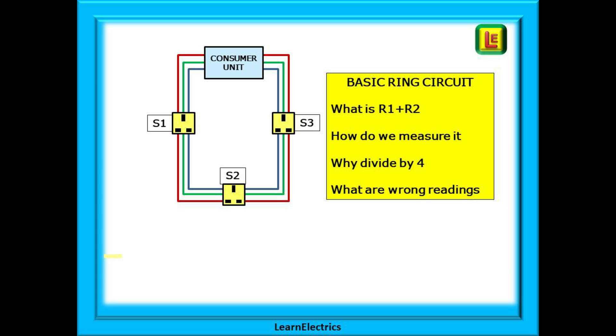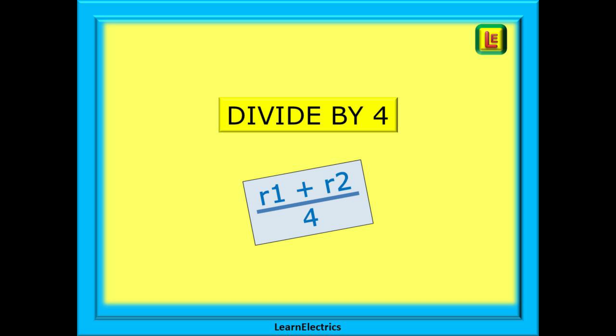Which will lead us on to looking at some wrong readings for a ring circuit test. How do you know when the numbers just don't add up? In this video we are going to use the ring circuit shown here throughout with just three sockets to keep things simple. Let's begin with the commonly taught divide by 4 method. You should all be familiar with this but here we will go into a little more detail. Stick with it and you will really start to understand ring circuit testing by the end of it.